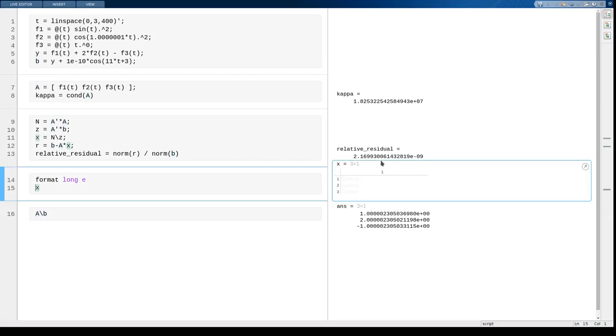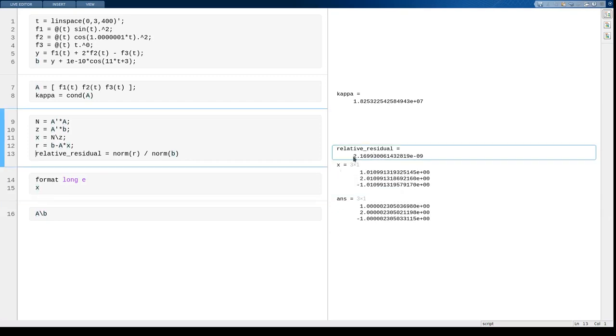However, you'll notice that normal equations did still give us a nice small residual comparable to our perturbation size. And that's what we said about linear systems as well. That you can get a small residual even when the error is large.